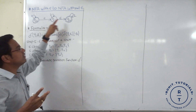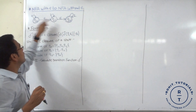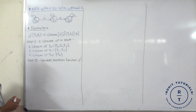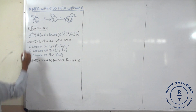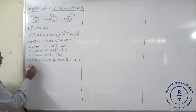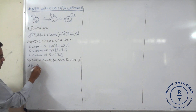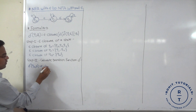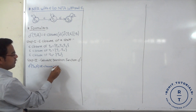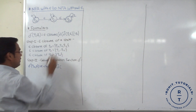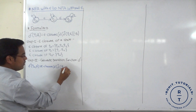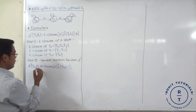We calculate delta dash for Q0, Q1, and Q2 separately. For delta dash of Q0 with input symbol 0, we apply the formula: epsilon closure of delta cap of Q0 with epsilon, then the input symbol 0.